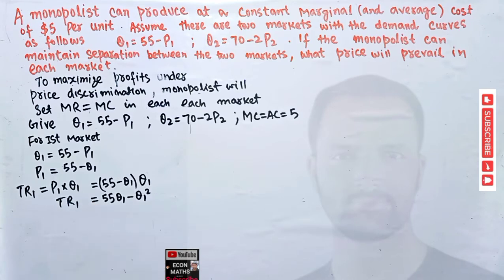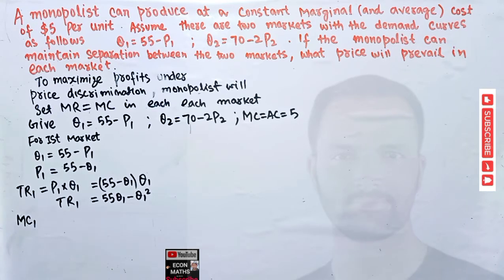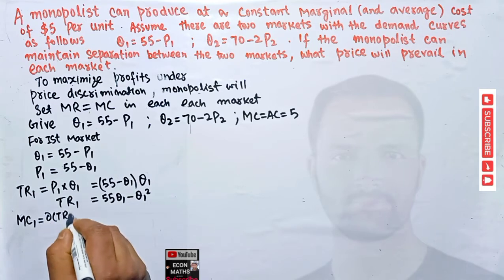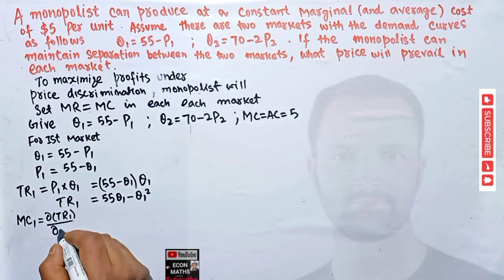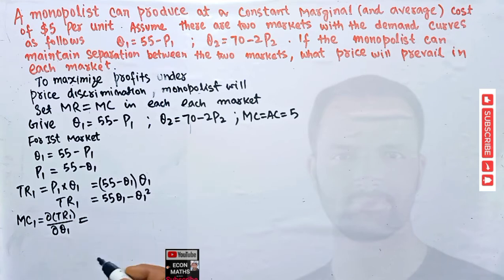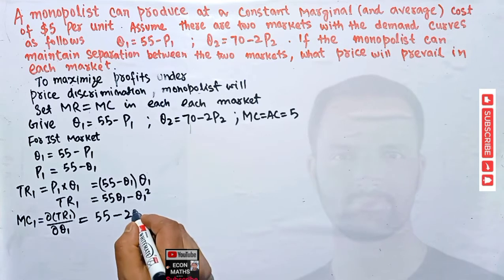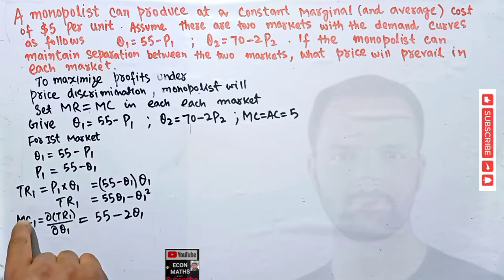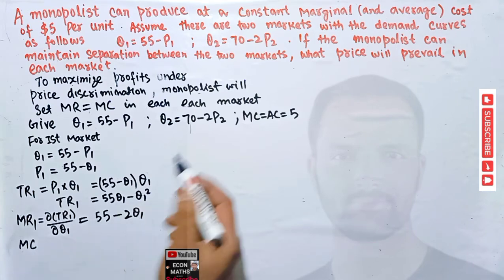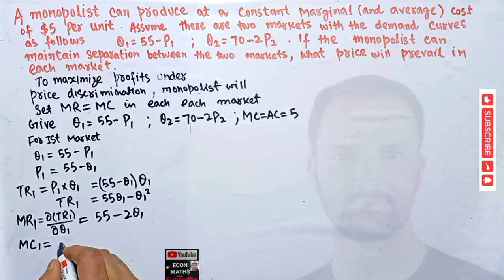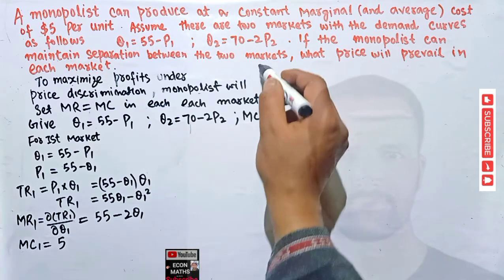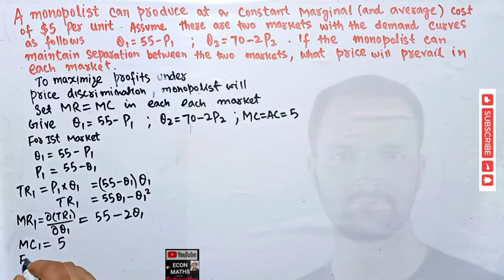Marginal revenue in the first market is simply the derivative of total revenue with respect to quantity Q1. Taking that derivative using the power function rule: the derivative of 55Q1 is 55, and the derivative of Q1 squared is 2Q1. So marginal revenue in the first market equals 55 - 2Q1. Marginal cost is constant at five dollars for both markets.